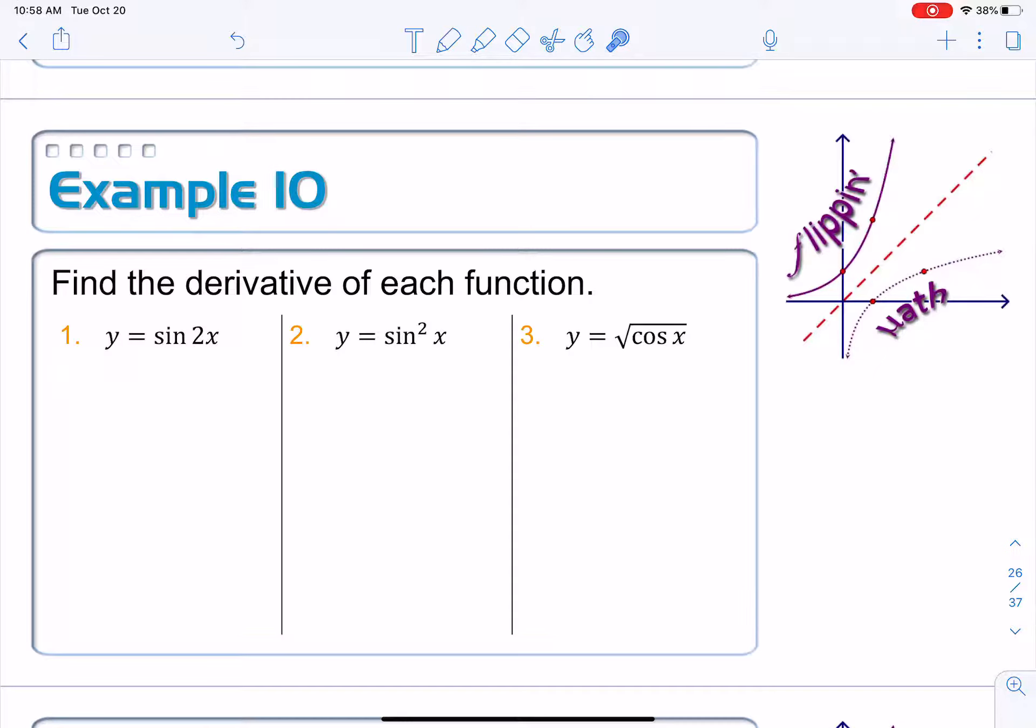Each one of these requires, in some kind of fashion, the chain rule. Why is that? Let's look at the first one. I've got the sine of 2x. 2x is inside of the sine function's composition. Number 2, I've got sine squared x. Well, really, the interior function is sine x and then you're squaring that. And then the same kind of thing is happening over here. The interior function is cosine and then we're taking the square root. All of these things need the chain rule.